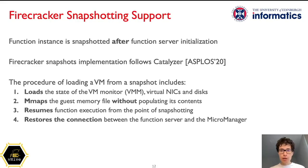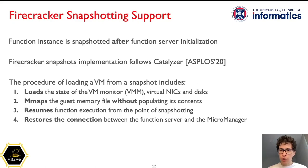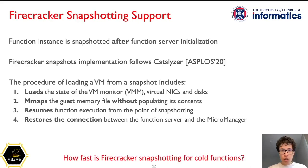Let us recall how Firecracker snapshots work. First, a snapshot of a VM is taken when a function in the VM is ready to serve incoming invocations. Loading a VM from a snapshot has three steps, similar to those described in the Catalyzer paper from ASPLOS'20. First, the hypervisor loads and restores the state of the VM monitor and all emulated devices. Then, the hypervisor maps the guest memory file into main memory without populating the memory contents, and resumes VM execution from the point at which the snapshot was taken. Finally, the microVM manager restores the connection with the function inside the VM — not essential for a generic VM restoration, but required to restore connectivity to the rest of the serverless infrastructure.